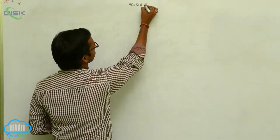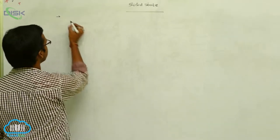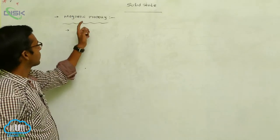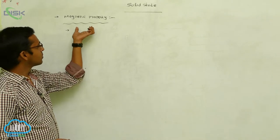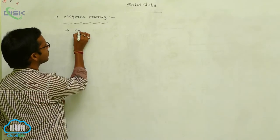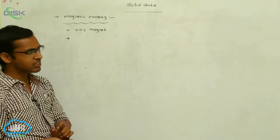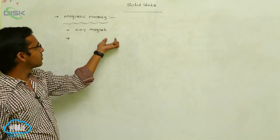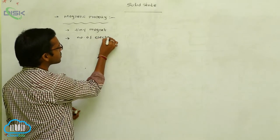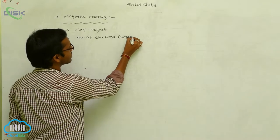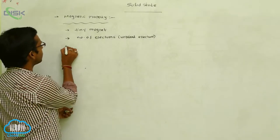In solid state, we discussed some properties. The solid state shows various properties, the first one being magnetic property. Every substance shows magnetic properties — every substance shows a small magnetic property. Magnetic property is essentially the attraction between molecules, ions, or atoms. This magnetic property mainly depends on the number of electrons, especially the number of unpaired electrons. The presence of unpaired electrons exhibits magnetic property. This magnetic property is classified into five types.